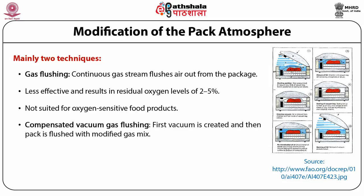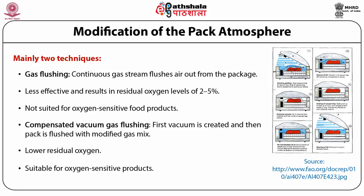Compensated vacuum gas flushing uses a two-stage process. In the evacuation stage, a vacuum is pulled on the pack to remove air; it is generally not possible to achieve a full vacuum since reduced pressure will cause water to boil, so the vacuum achieved is generally between 5 and 10 mmHg. The cooler and drier the food, the lower the achievable vacuum. In the gas flushing stage, the pack is flushed with the modified gas mix. The evacuation of air from the pack results in lower residual oxygen levels than gas flushing alone, making this method better suited for packing oxygen-sensitive products, though the two-stage process results in a lower packaging rate.